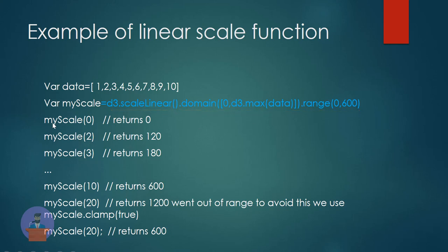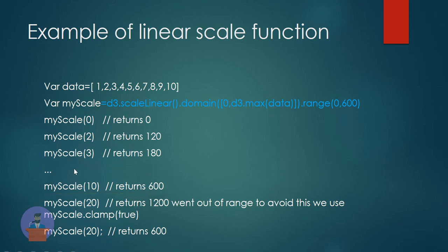So as you can see, when I call it with parameter 0 it will return 0, and if I call it with parameter 2 then it will return 120. When I provide my max value it returns the max of range. What if I provide a value outside the domain? Here I have provided 20 so it will return 1200 — so it acts like a linear function.